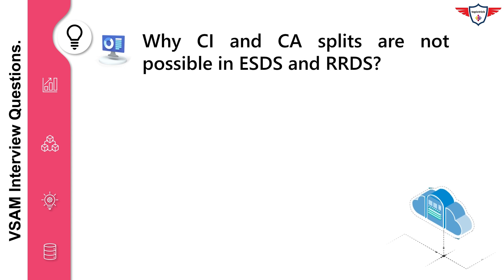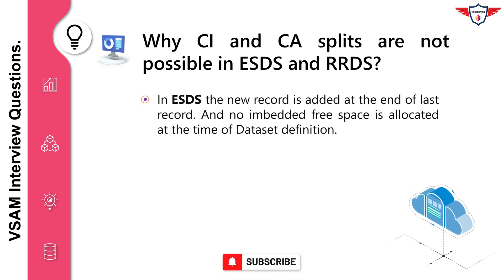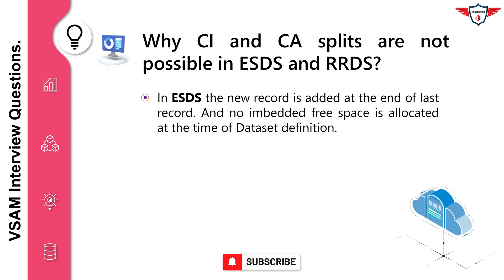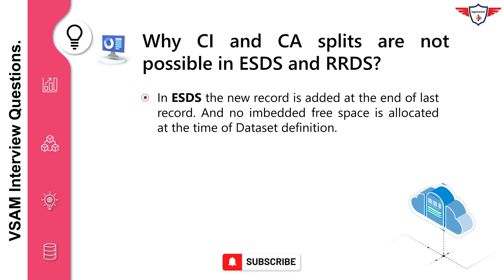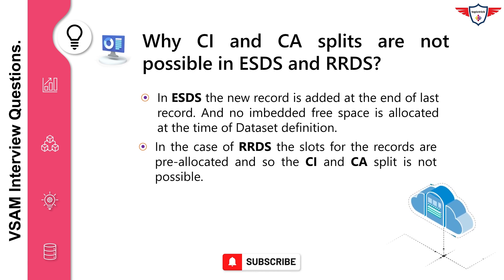Why are CI and CA splits not possible in ESDS and RRDS? In ESDS, the new record is added at the end of the last record, and no embedded free space is allocated at the time of dataset definition. In the case of RRDS, the slots for the records are pre-allocated, and so the CI and CA split is not possible.